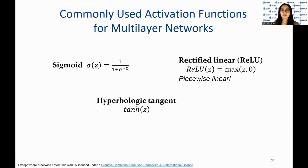The ReLU, also known as the rectified linear unit function, is a simple activation function that returns the input if it is positive and 0 otherwise. It is commonly used in deep learning because it is computationally efficient. Hyperbolic tangent, also known as tanh, is an activation function commonly used in multi-layer networks. It is similar to the sigmoid function but ranges from negative 1 to 1, instead of 0 to 1.